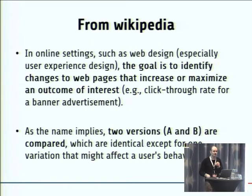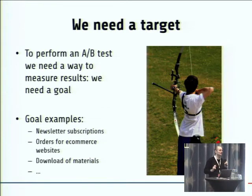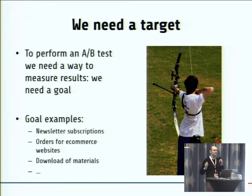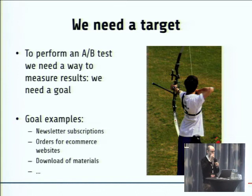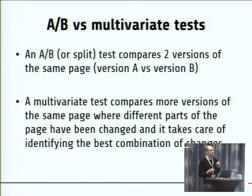When you perform an AB test, first of all, you need a target — a goal to reach. You have to define your target and then you can test the ways to reach it. Some examples are newsletter subscriptions, orders for an e-commerce website, and so on. You have the possibility to perform two kinds of tests. The first one, the simplest one, is an AB test, which means you have two versions of the same page and you want to know which one gives you the best result.